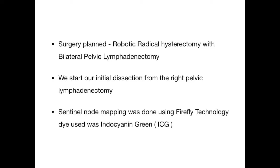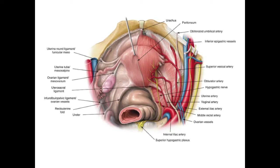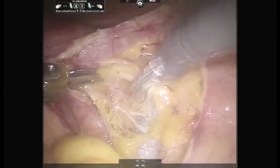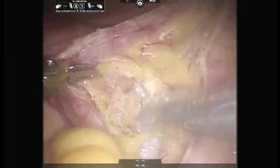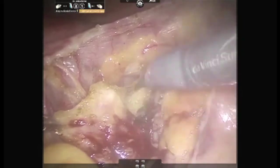We start our initial dissection from the right pelvic lymphadenectomy. Sentinel lymph node mapping was done using Firefly technology by Indocyanine Green Dye. The following diagram is of relevance in the proposed surgery, wherein the pararectal-paravesicle spaces as well as the branches of internal iliac artery, especially the uterine artery, is of importance. We start our dissection from the right side, wherein after opening the peritoneum, we are first able to detect the ICG-based fluorescent sentinel lymph node on the right common iliac region.